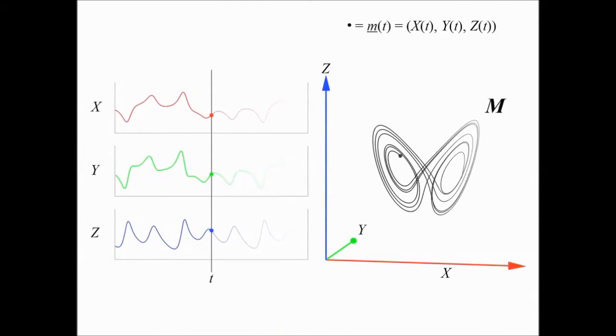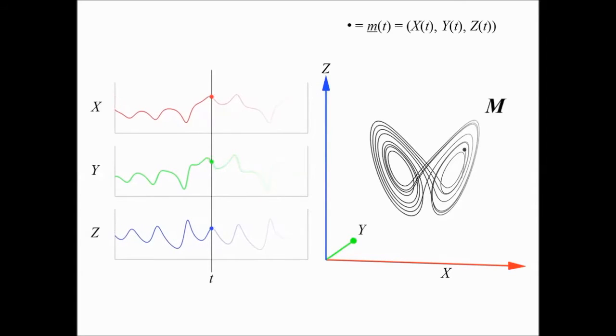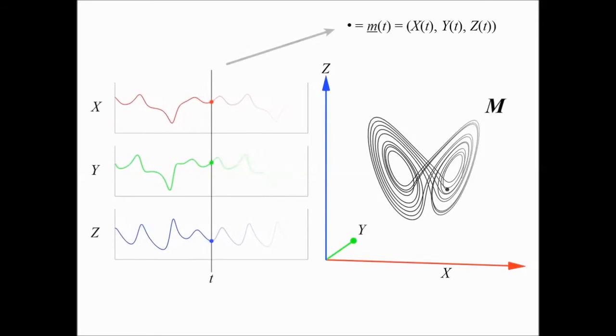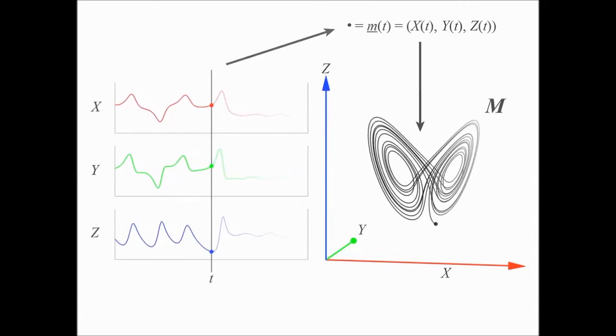In this panel, we can see the three time series x, y, and z, each of which is really a projection of the motion on that manifold, and what we're doing is the opposite here. We are taking the time series and projecting them back into the original 3D state space to recreate the manifold, that butterfly attractor.